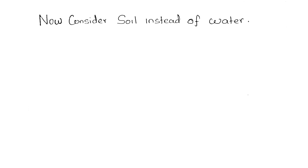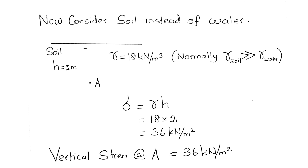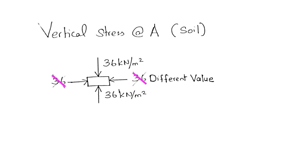Now consider soil instead of water. Point A is 2 meters below the soil surface, with γ_soil equals 18 kN/m³. Note that normally γ_soil is greater than γ_water. Stress σ equals γ·H equals 18 times 2 equals 36 kN/m². However, this equation is valid only in the vertical direction; horizontal or other directional stresses are different — not the same as in water.